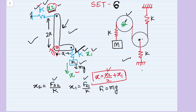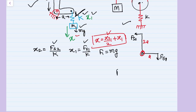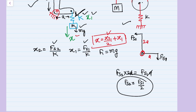We also need to relate forces Fs1 and Fs2 using the free body diagram of the fulcrum. One force Fs1 acts downward and another force Fs2 acts at the other side. Taking moments about the pivot point, with arm lengths 2a and a, we get Fs2 times 2a balanced by Fs1 times a, which means Fs2 equals half of Fs1.